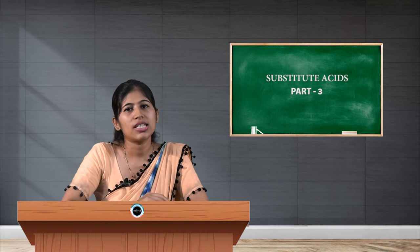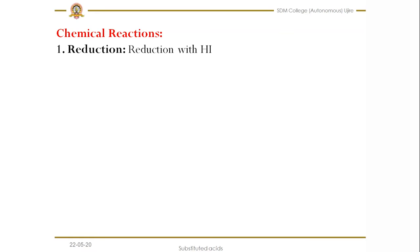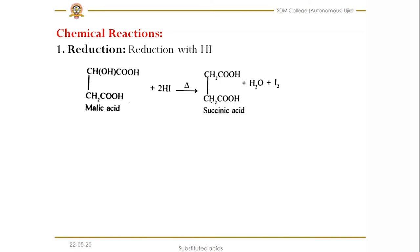Let us see the chemical reactions of malic acid. The first reaction is reduction. When you do the reduction of malic acid in the presence of hydrogen iodide — we can use any other reducing agent, but here I am talking about hydrogen iodide — removal of the hydroxy group takes place first. As a result we get succinic acid.